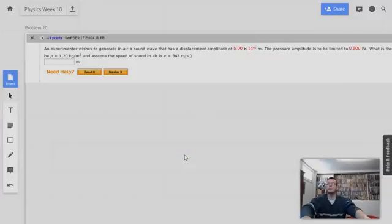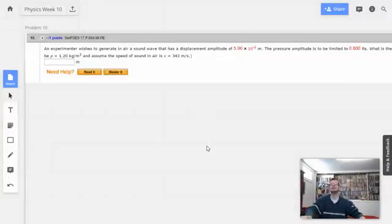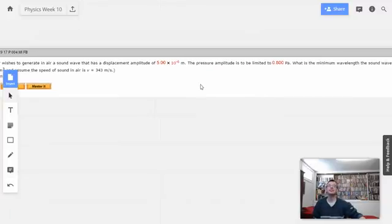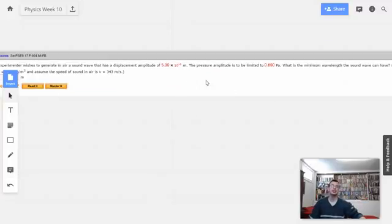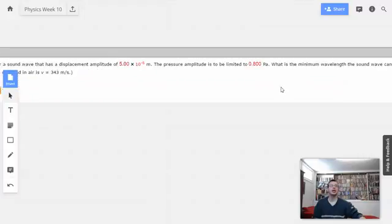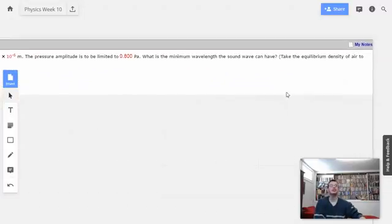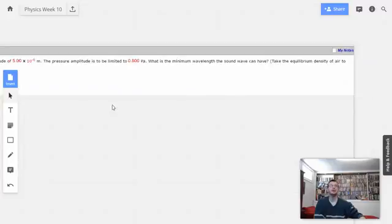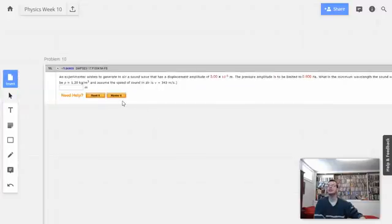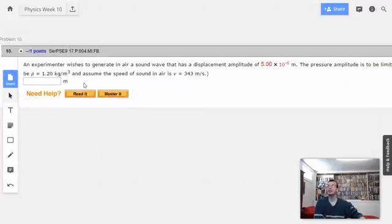Alright, week 10, problem 10. An experimenter wishes to generate in air a sound wave that has a displacement amplitude of 5 times 10 to the negative 6 meters. The pressure amplitude is to be limited to 0.8 pascals. What is the minimum wavelength the sound wave can have? Take the equilibrium density of air to be 1.2 kilograms per cubic meter and assume the speed of sound in air is 343 meters per second.